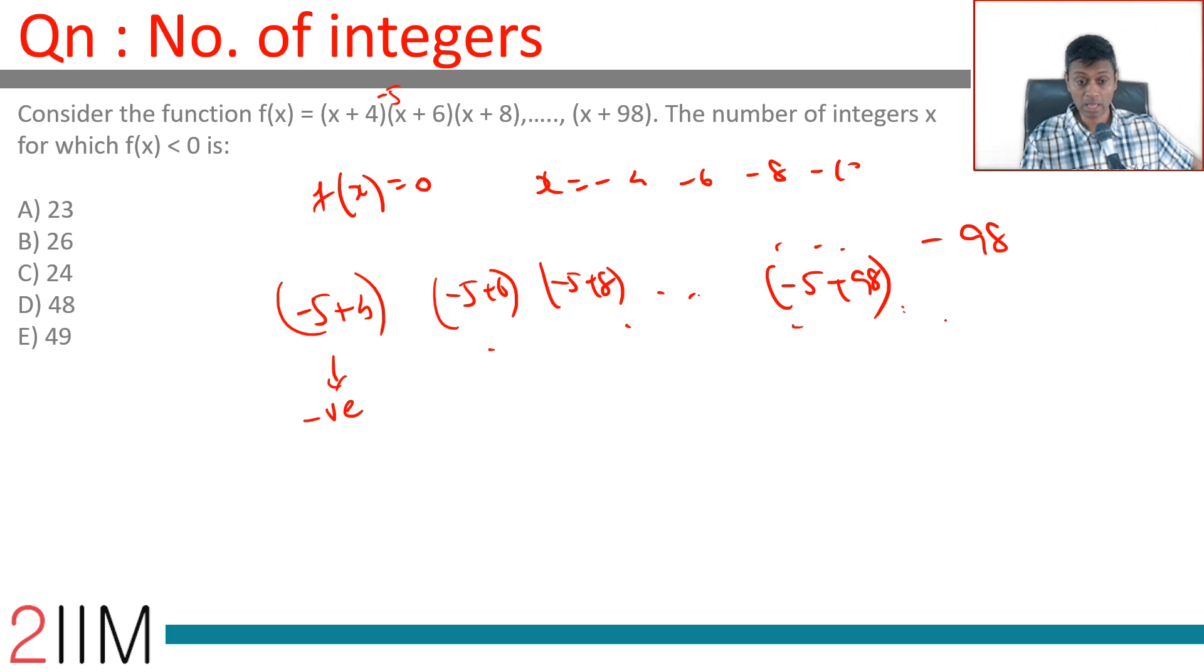So our f(x) will become negative. So the number of integers, forget number of integers, x equal to -5 works for us.